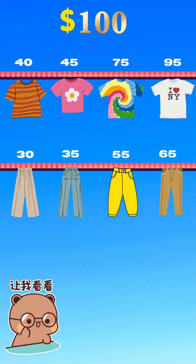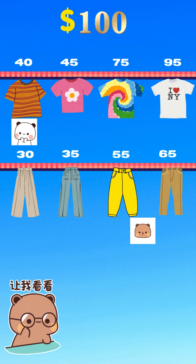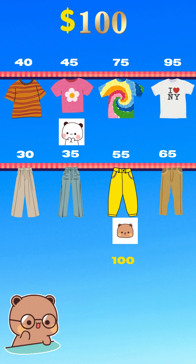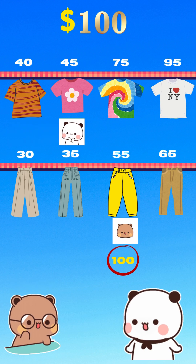Takes forever. Instead, imagine you start from the cheap end and I start from the expensive end. We check our prices together. If it's over $100, I move inward. If it's under $100, you move inward. One smooth pass and we'll find the perfect pair.